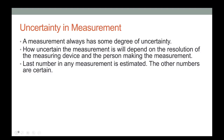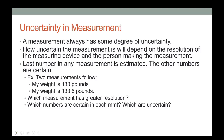The last number in any measurement is estimated; the other numbers are called certain numbers. For example, a bathroom scale reading 130 pounds versus a digital scale reading 133.6 pounds — the digital one has greater resolution and more digits associated with the measurement.